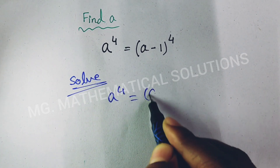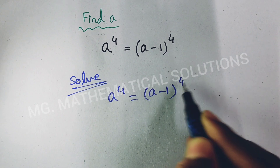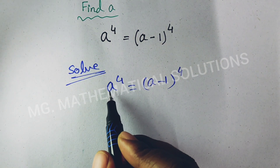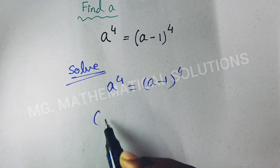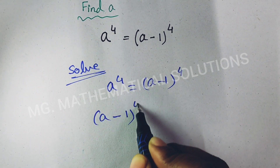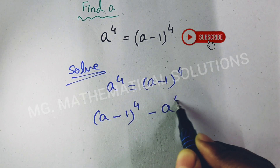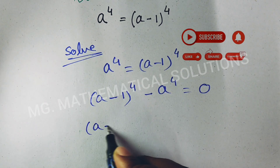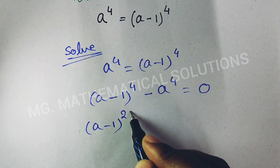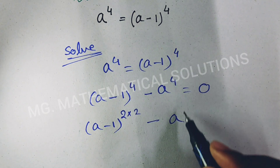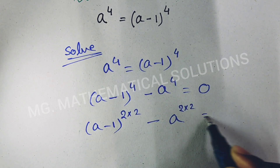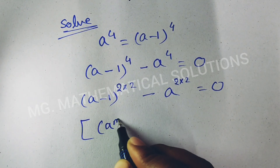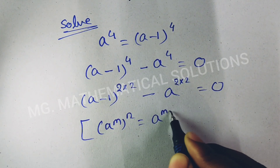a to the power 4 equal to (a minus 1) whole to the power 4. We rearrange this equation: (a minus 1) whole to the power 4 minus a to the power 4 equal to 0. We can write the exponent 4 as 2 times 2. Now we use the formula: a to the power m, whole to the power n, equal to a to the power m times n.